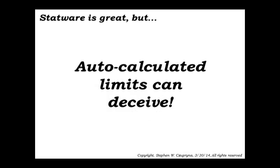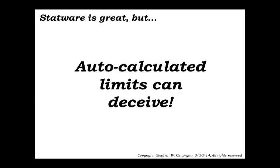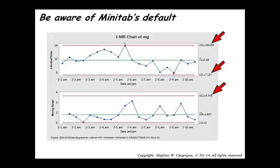Coming down the home stretch, pitfalls to avoid from painful personal experience: auto-calculated limits can deceive. Software does a wonderful job, but it cannot think for us. If we use the entire data set, 20 points to calculate our limits, you get different numbers. It will start giving you false indications. The problem here is you have really two processes, and you've mixed all of that together. So beware of Minitab default. It will automatically use all the data if you don't tell it otherwise.